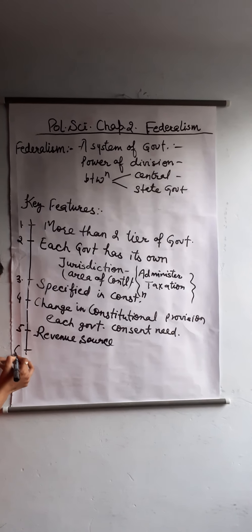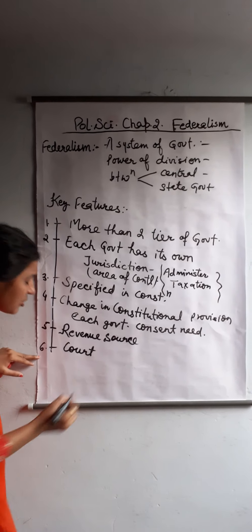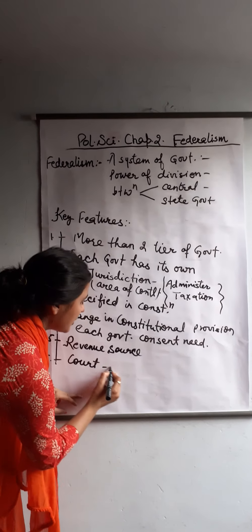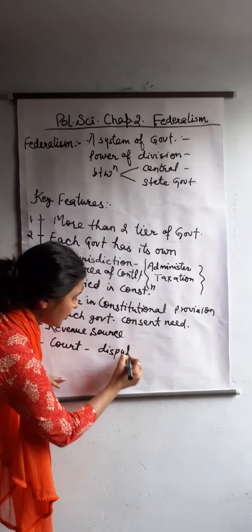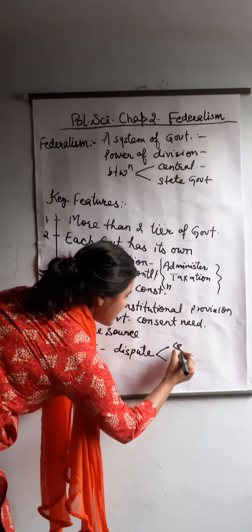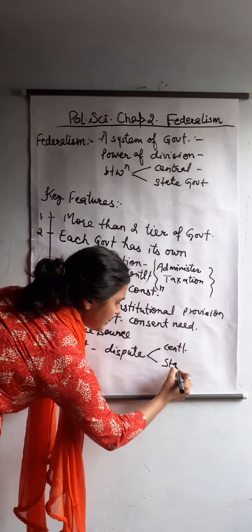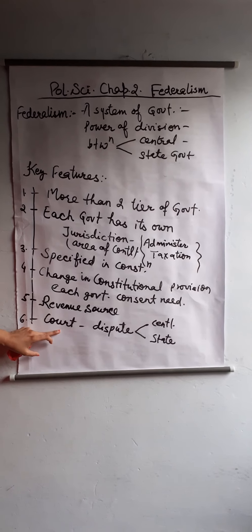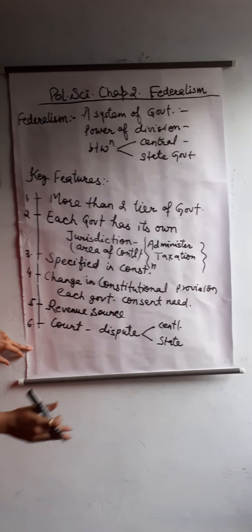The sixth point is the court. The court is the body that resolves disputes when there is a dispute between two governments — the central and state governments. The court maintains the balance in the federal system.